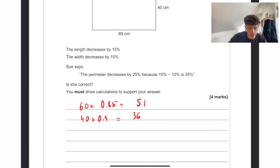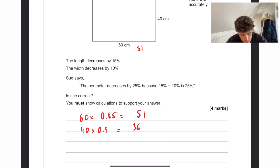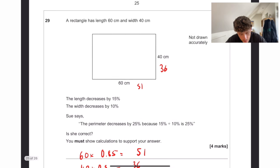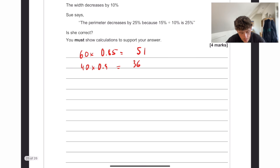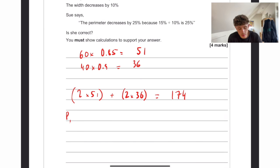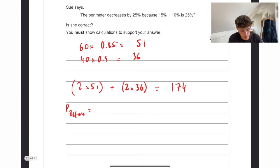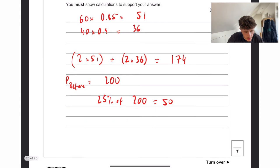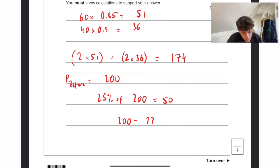So the perimeter now decreases supposedly by 25%. Let's just work out what the new perimeter is. So we've got 51 there, 36 there, 36 also there, and 51 there. So 2 lots of 51 add 2 lots of 36, 174. Now the perimeter before would have been just 200. Now as you can see, 25% of 200 is equal to 50, and 200 minus 174 does not equal 50, so they are wrong.